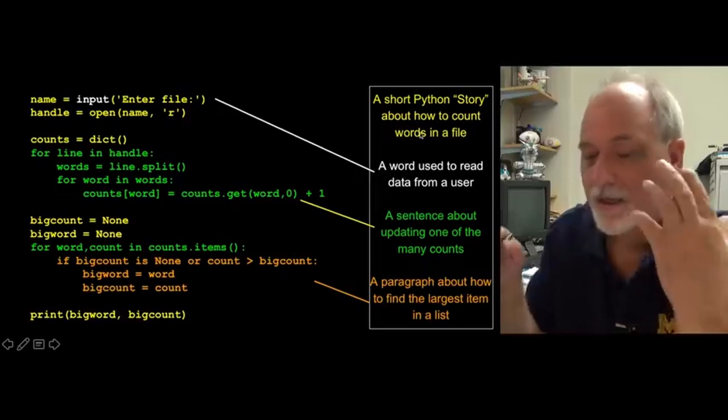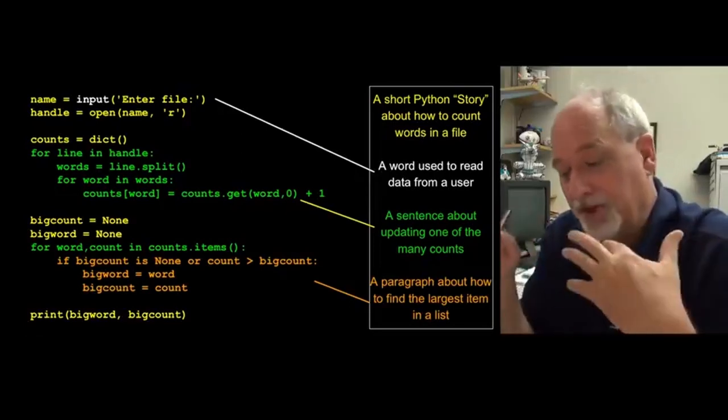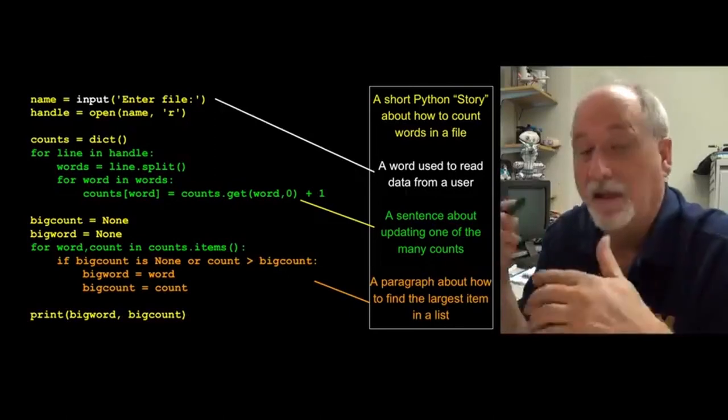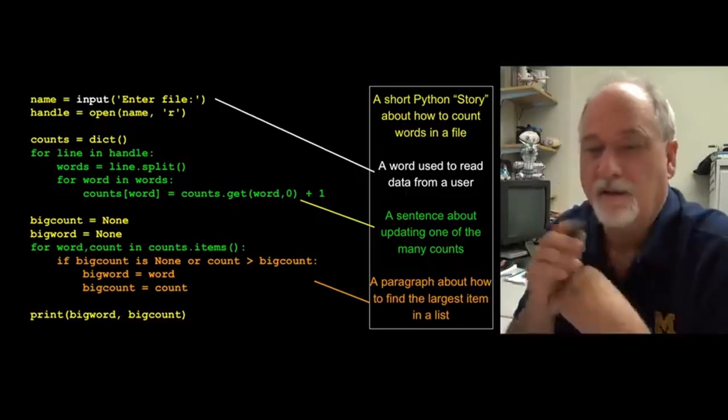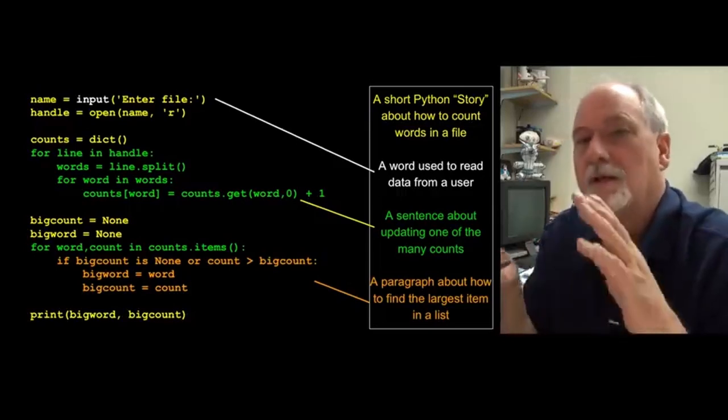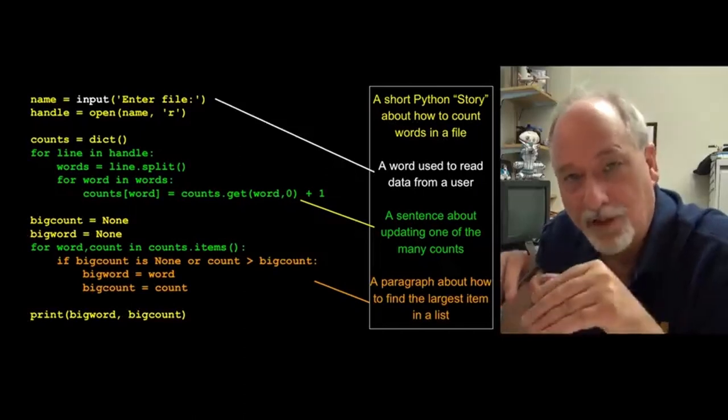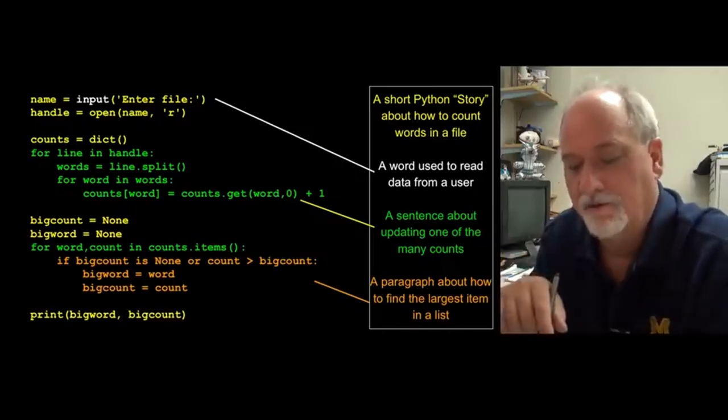And this is of course the program that figures out the most common word and prints that most common word out. And so this is a Python short story. It reads some data, it reads the name of a file, it opens that file, it talks about how to make a histogram, and then it looks through for the most common word. So don't worry too much about this. Over the next couple weeks we'll fill in the pieces so that you absolutely understand every single line of this code.